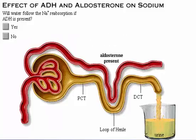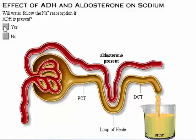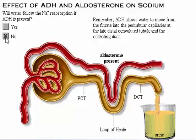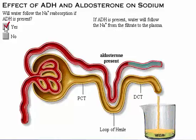For more information on aldosterone, click here. ADH allows water to move from the filtrate into the peritubular capillaries at the late distal convoluted tubule and the collecting duct. If anti-diuretic hormone is present, water will follow the sodium from the filtrate to the plasma.